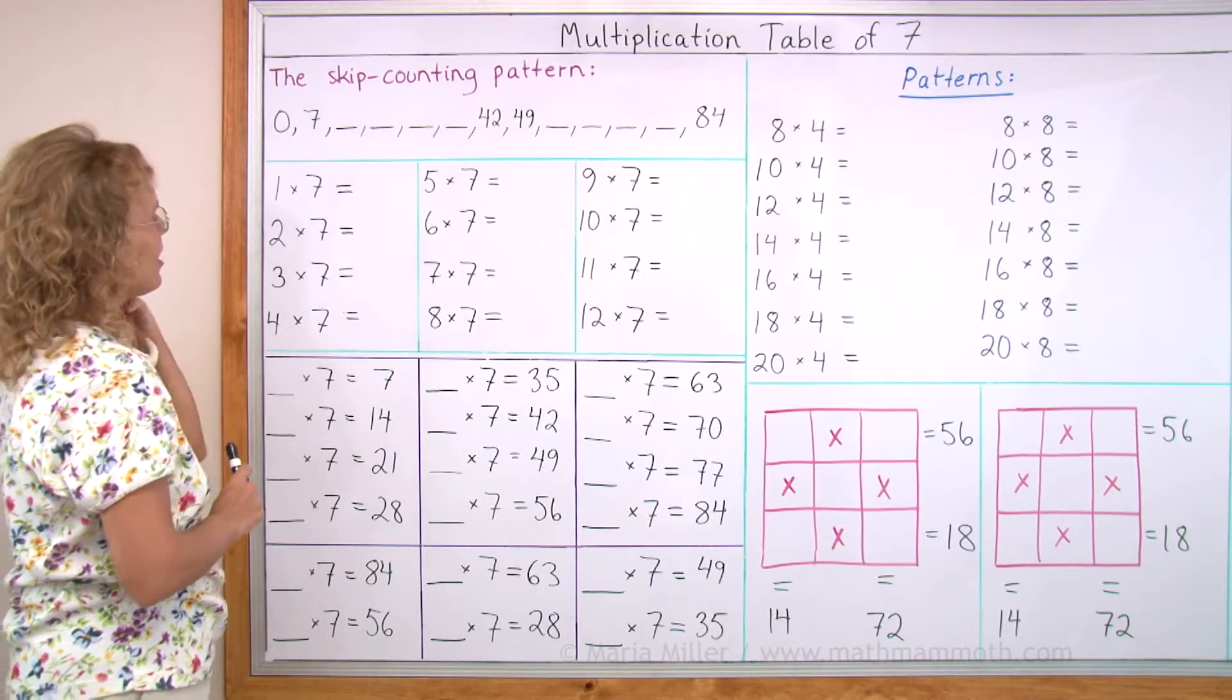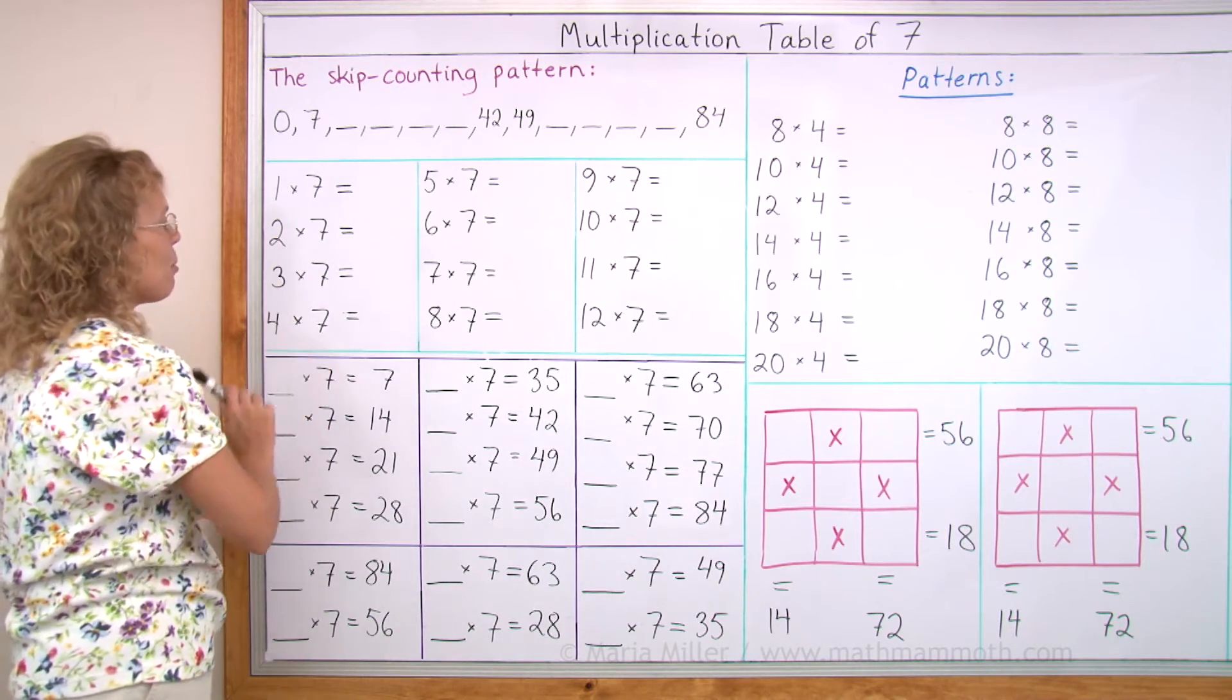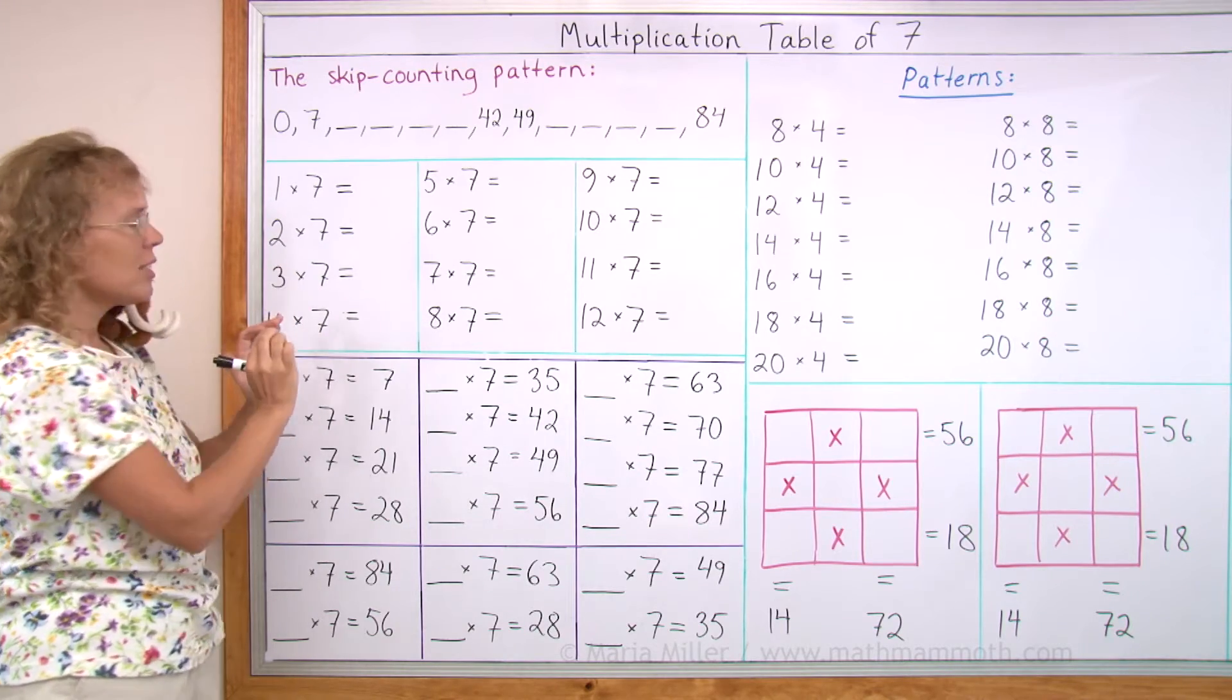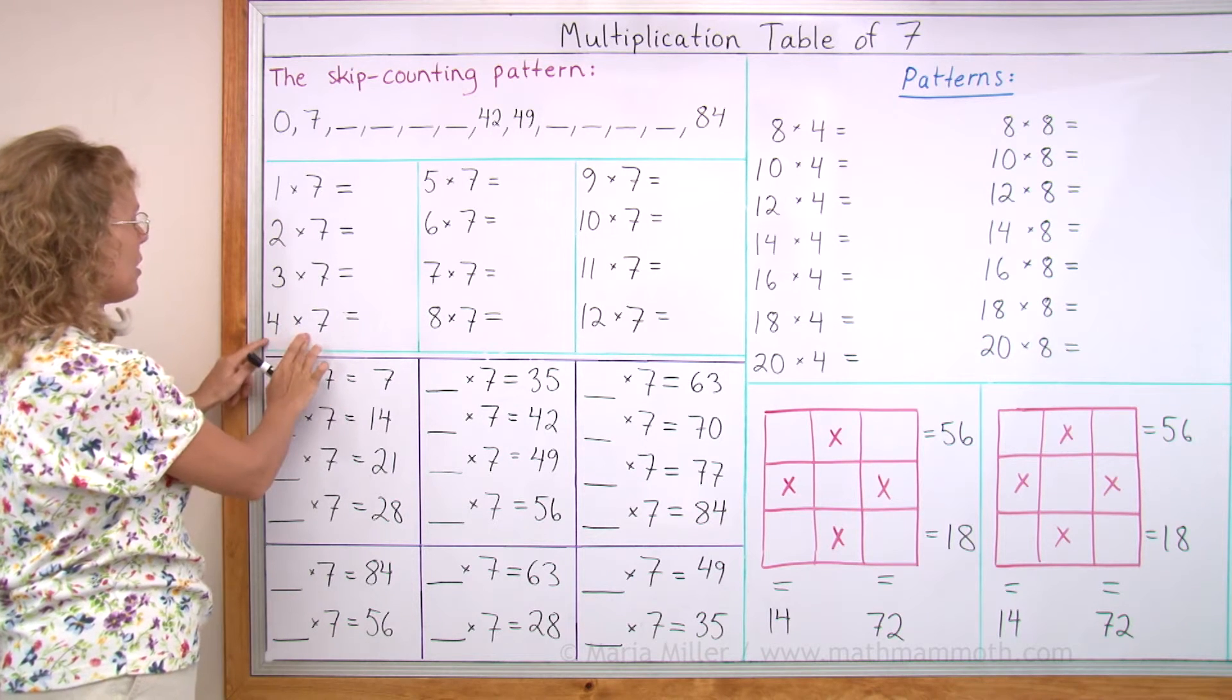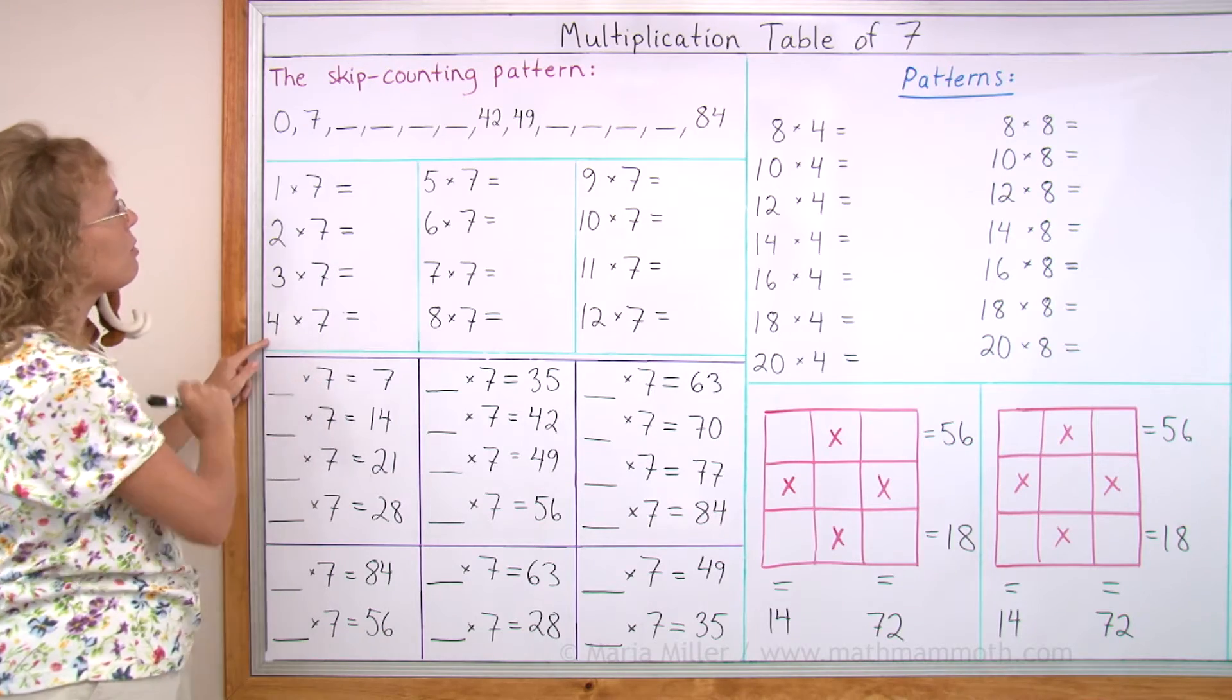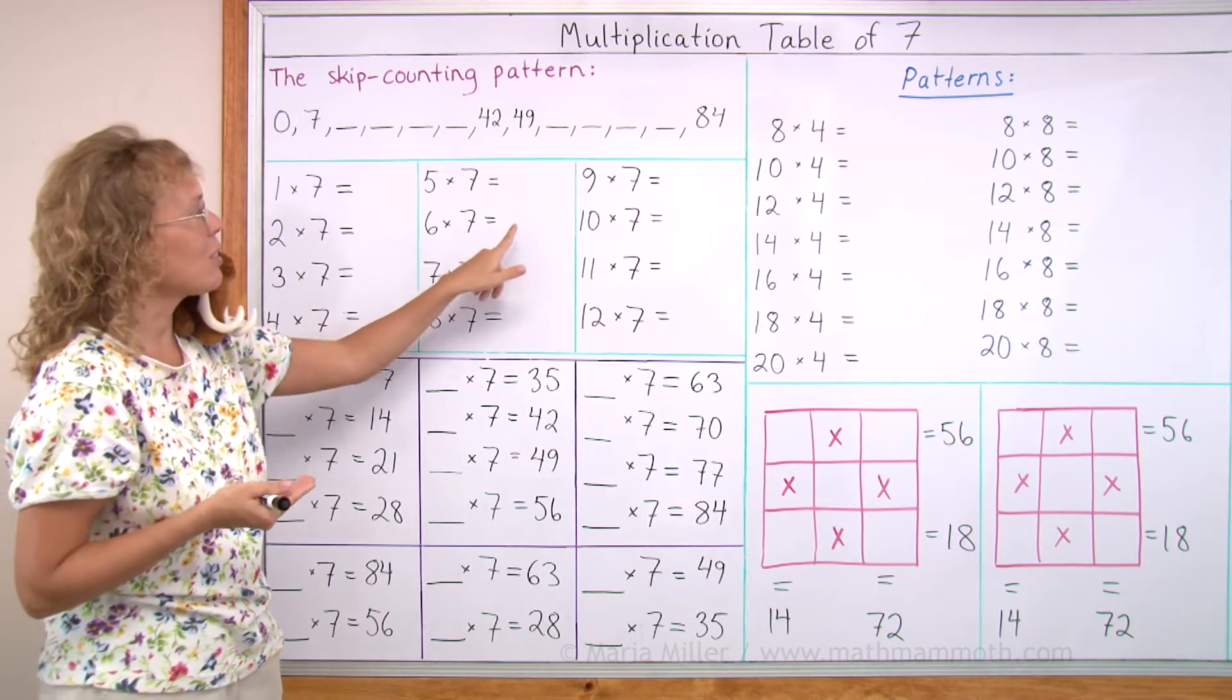And now we're going to look at the table. Like I said, in this table you already know most of these things because 3 times 7 is in the table of 3, 7 times 3, right? It's 21. 4 times 7 is 28 because it's in the table of 4, 7 times 4. 6 times 7, you should remember from your 6s. It is 42.